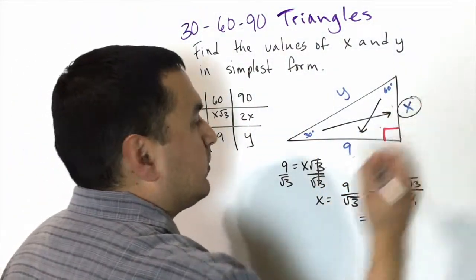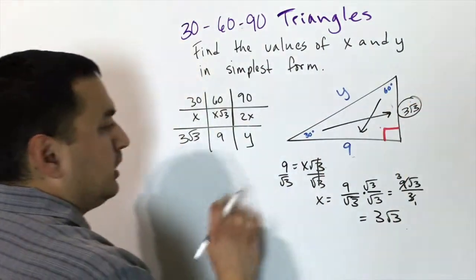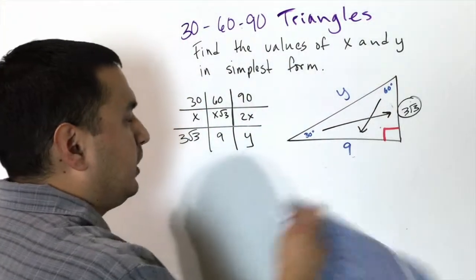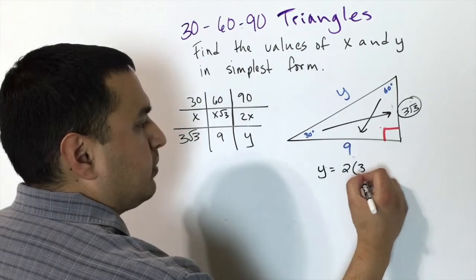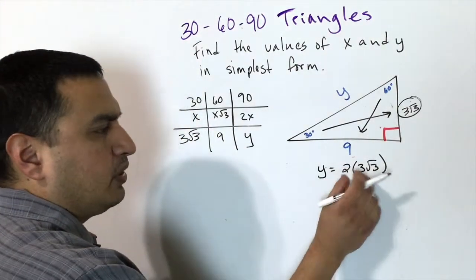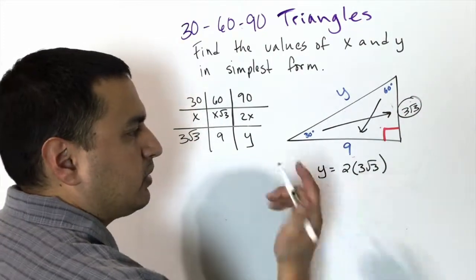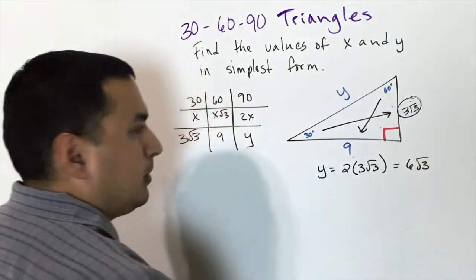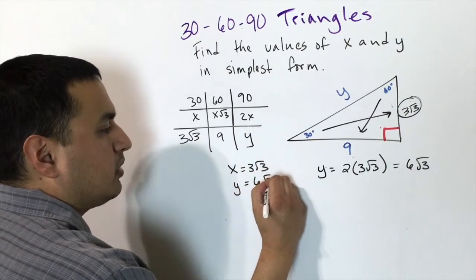Now that we know x = 3√3, we can find y. Since y is across the 90°, it equals 2 times x, so y = 2 × 3√3. The numbers 2 and 3 multiply together while the √3 tags along, giving y = 6√3. So x = 3√3 and y = 6√3.